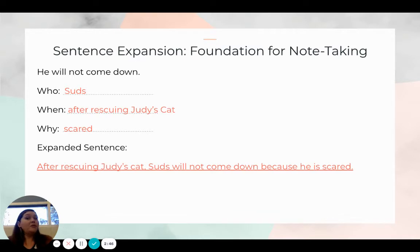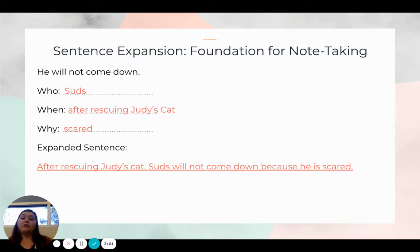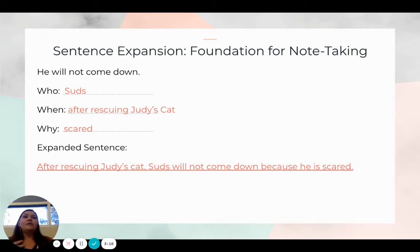We have our students take notes about those specific pieces, and then they're able to create a dynamic sentence. 'After rescuing Judy's cat, Suds will not come down because he is scared.' So we're able to take that kernel sentence through some note-taking and add some additional pieces to it to create a more powerful sentence.